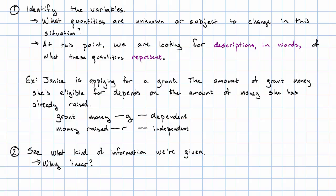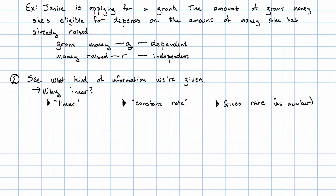The kinds of phrases that suggest that we might want a linear equation—well, obviously, if it says linear, that means we're going to want a linear equation. If it says constant rate, that suggests a linear equation. If it just gives a rate as a number, that is also going to suggest a linear equation. Why? Because if I tell you a number, that suggests that that number is constant. Three is always three.